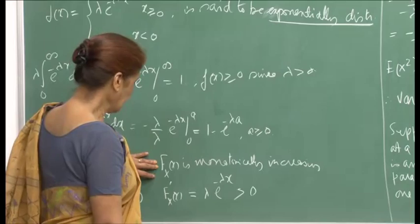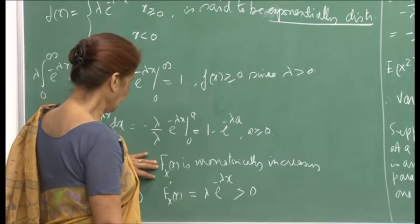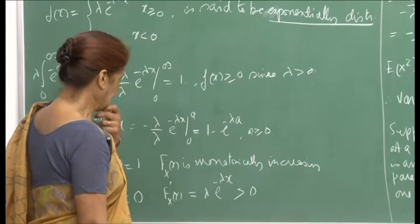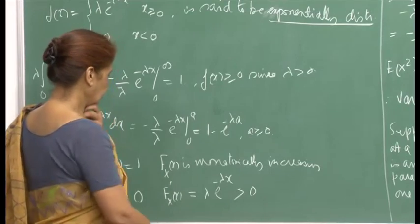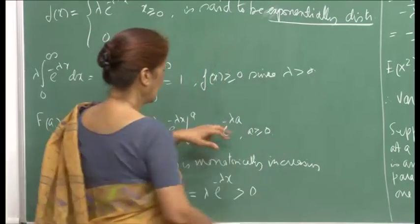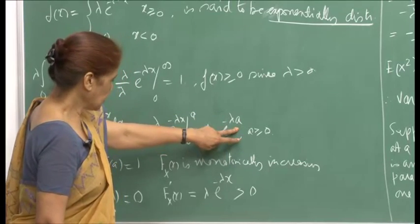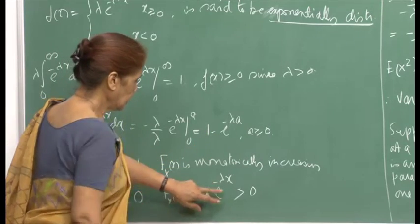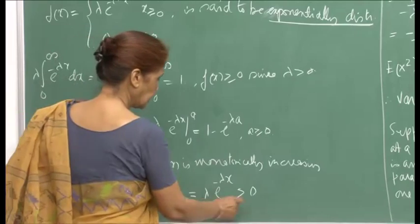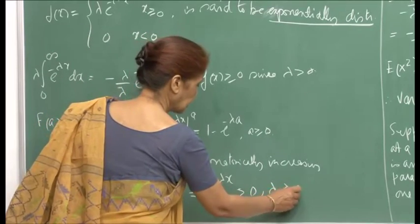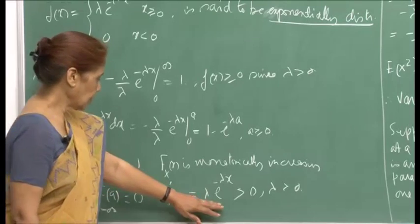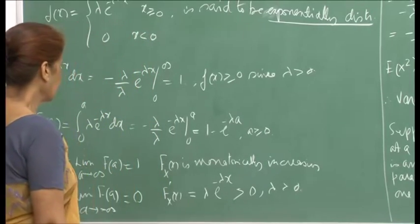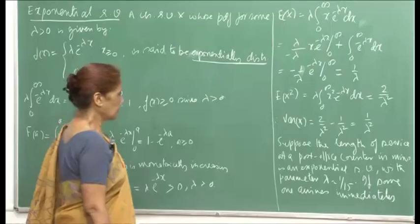F(x) is monotonically increasing. Taking the derivative F'(x) gives lambda e raised to minus lambda x, and since lambda is greater than 0, this is non-negative, so the function is monotonically increasing. All properties of a cumulative distribution function are satisfied.